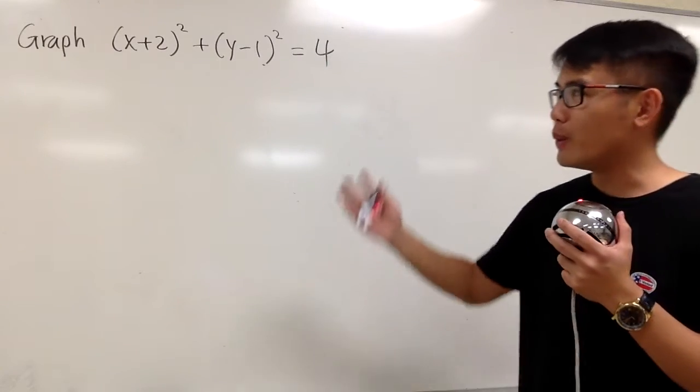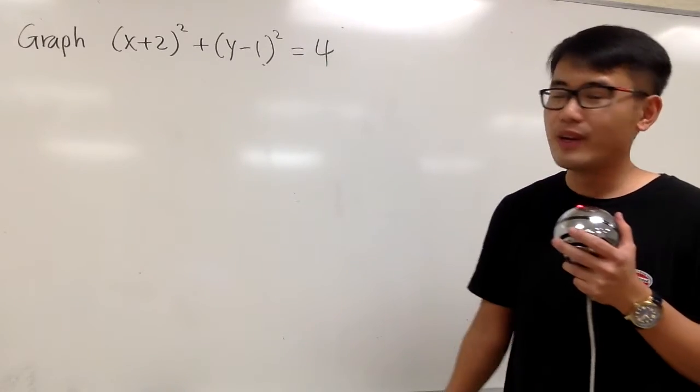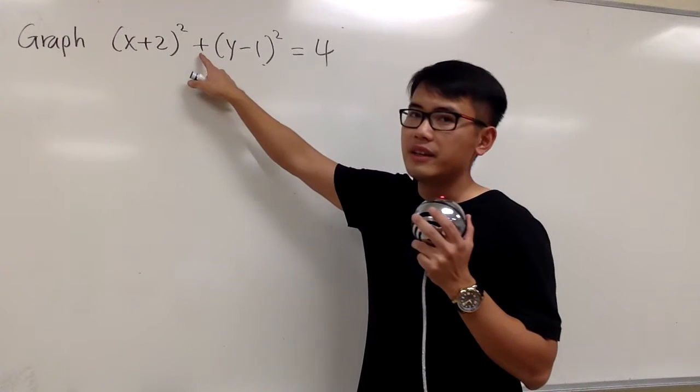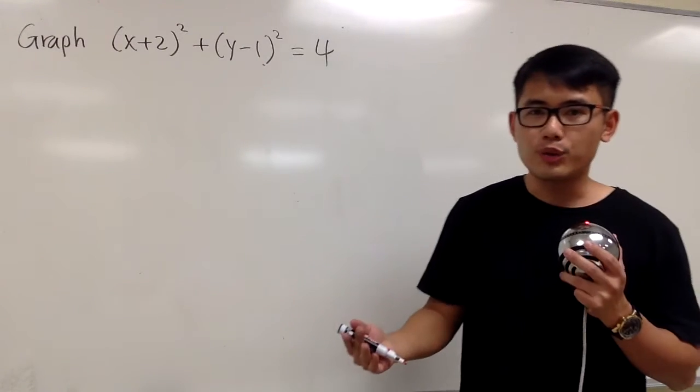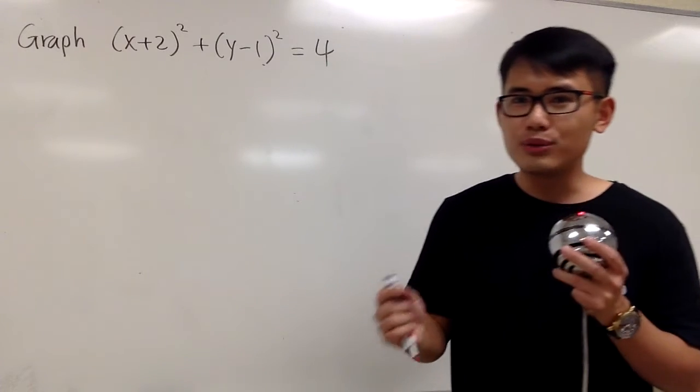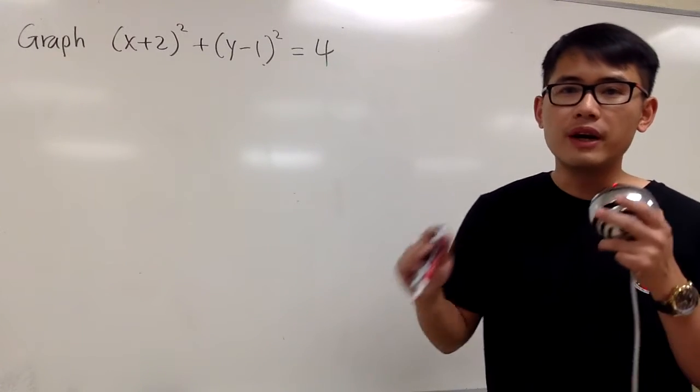What kind of graph are we going to end up with? Well, we're talking about an addition situation, and the x and the y are both being squared, right? Therefore, you can expect to have either a circle or an ellipse.